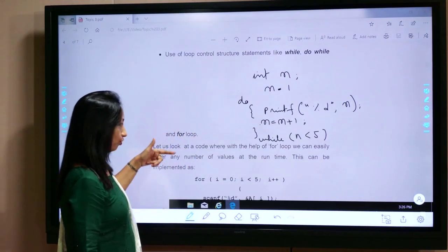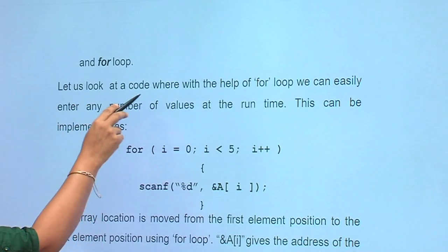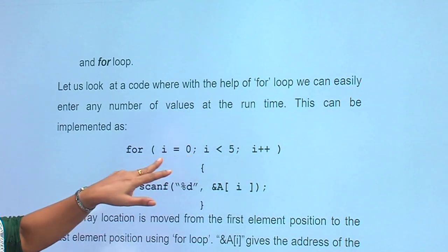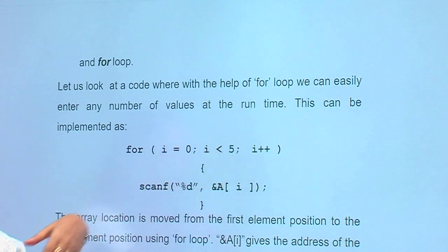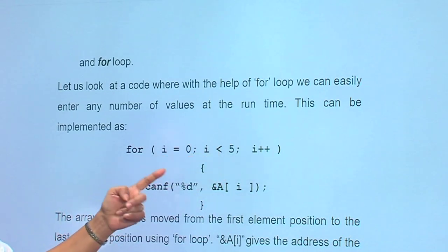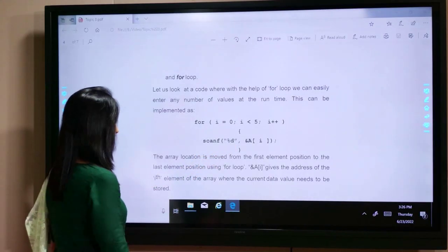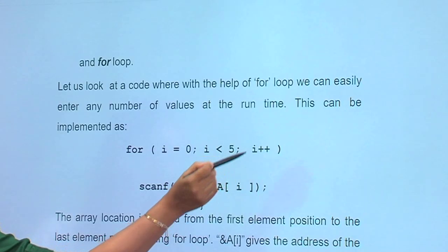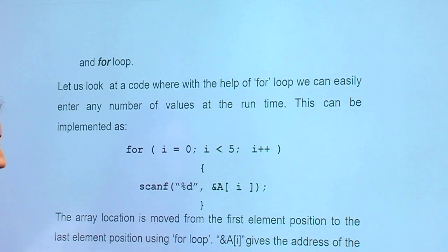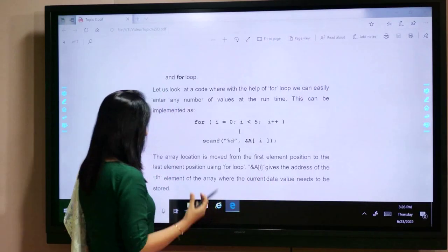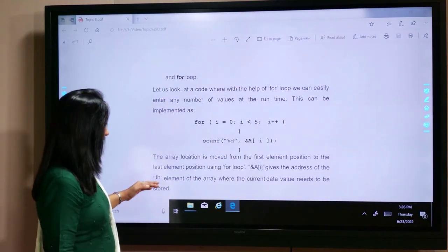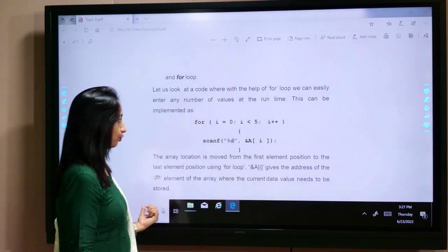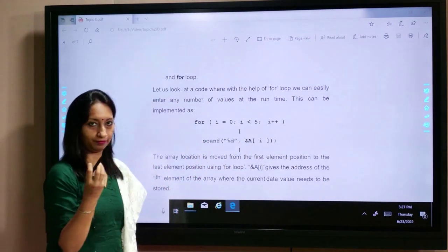Next is the for loop. Looking at the code: for i = 0; i less than 5; i++. Then scanf takes the value using ampersand a[i]. The array location moves from the first element to the last element as i increments. Ampersand a[i] gives the address of the i-th element where the current value needs to be stored.